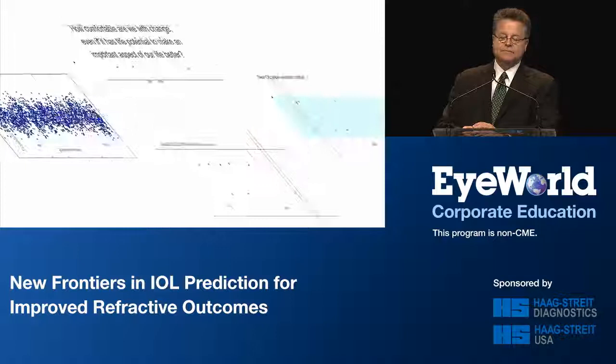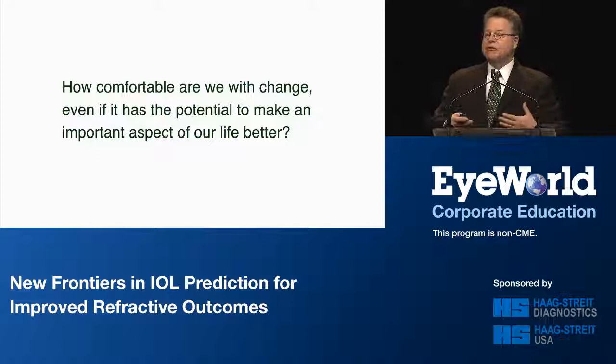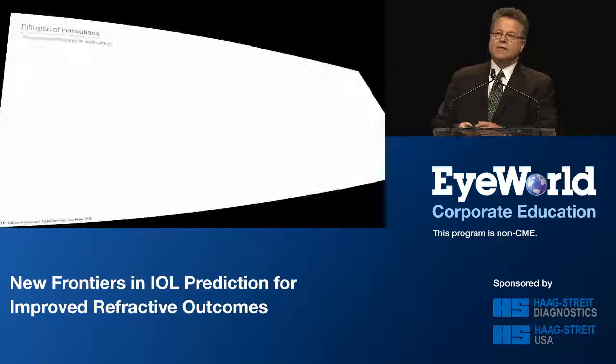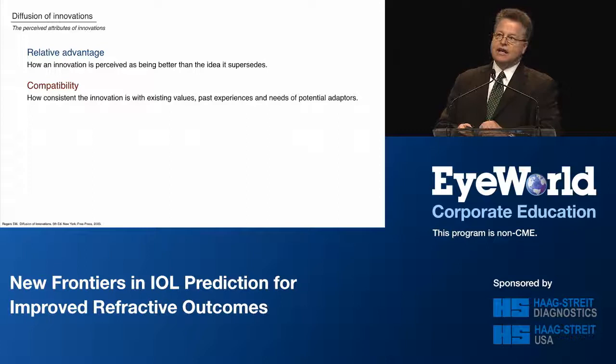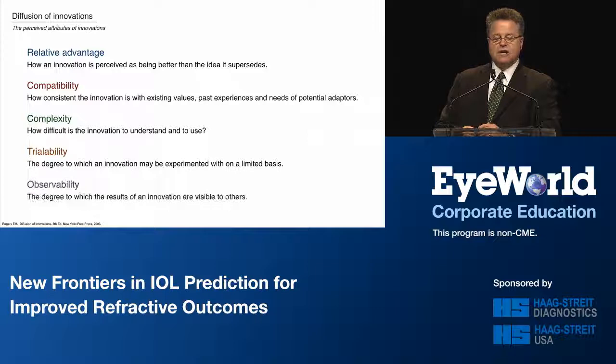How comfortable are we with making change? We as surgeons are very reluctant to change for fear of something unanticipated. To replace something we've used for 40 years requires that several criteria be fulfilled: it has to have an advantage, be compatible with what we know, not be so complex we can't use it, and we have to be able to trial it and observe improvements in a way we believe them.